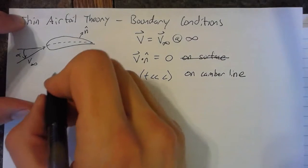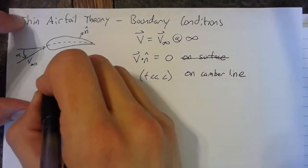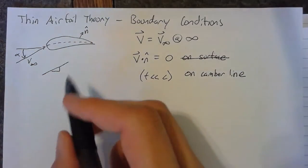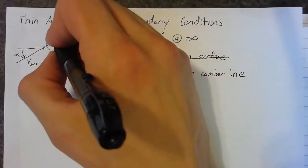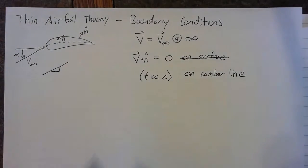Well, let's start looking at the contributions of different things towards this normal component on the camber line. So we're no longer using this normal. Instead, we're going to be using a normal on the camber line in order to determine this.